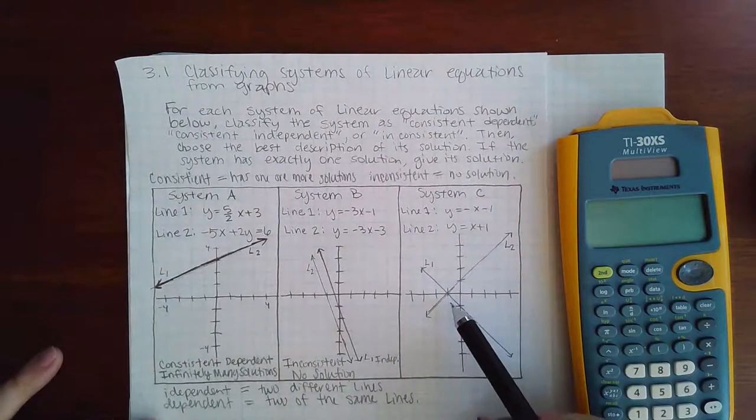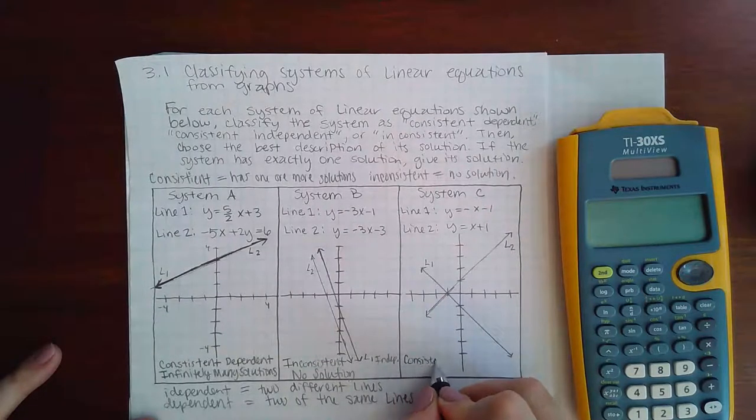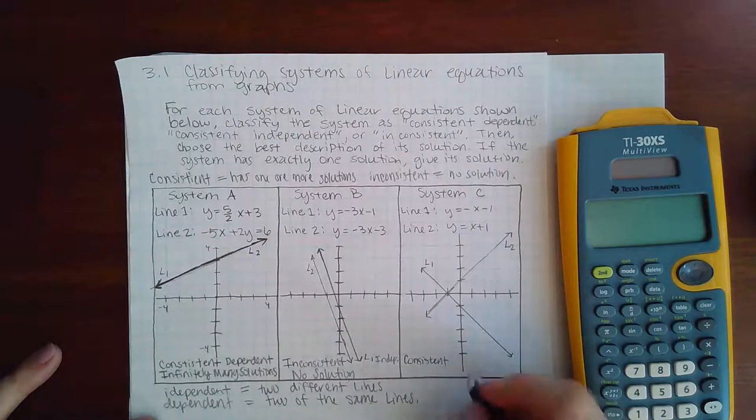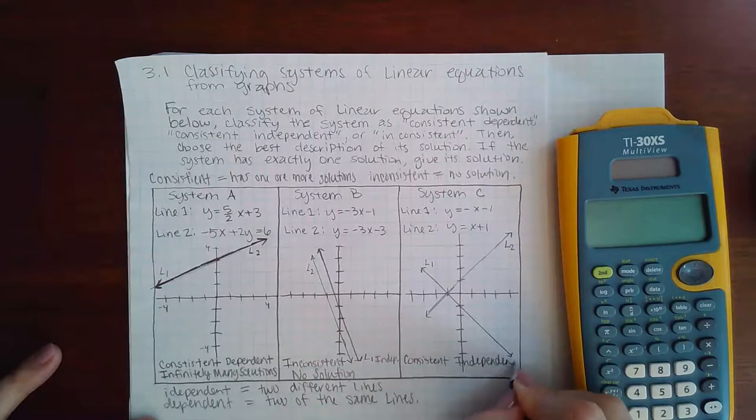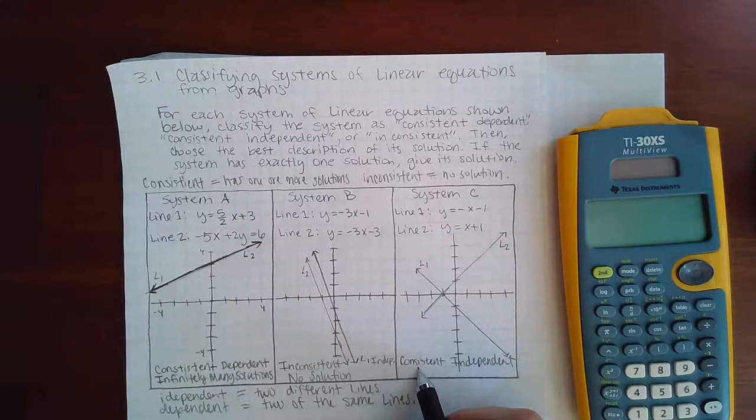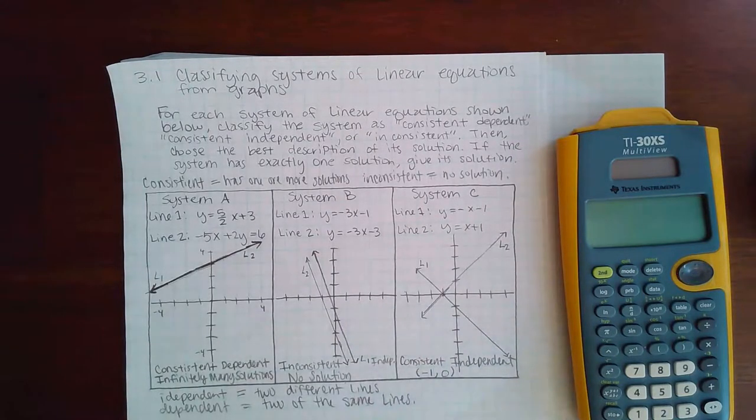Here you do have a solution, so this is a consistent system. And they are two different graphs, so this is also an independent system. And the one solution is right there. What is the coordinate of that? It's going to be negative one for x and zero for y.